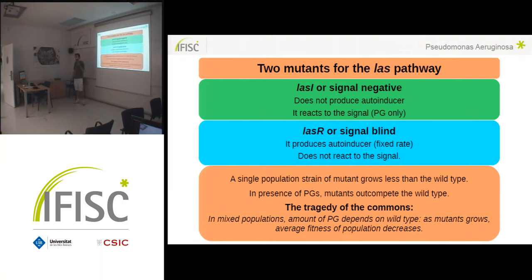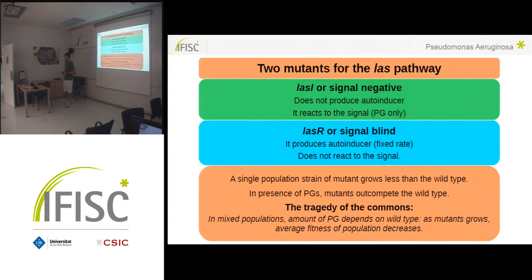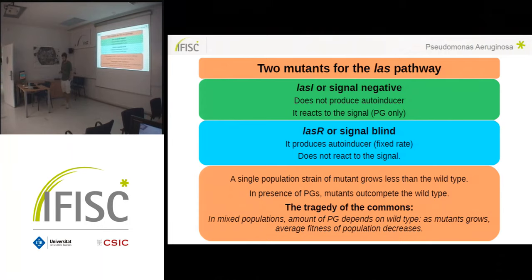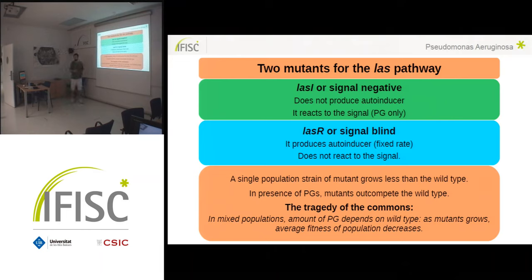It is important to note that a single population of these mutants grows less than the wild type strain, because they cannot produce the public good by themselves. However, if you put a mixed population of wild type and one of these mutants, the mutants are able to get the public good produced by the wild type. They grow more than the wild type because they benefit from the public good without bearing the cost of producing it, and they outcompete the wild type.